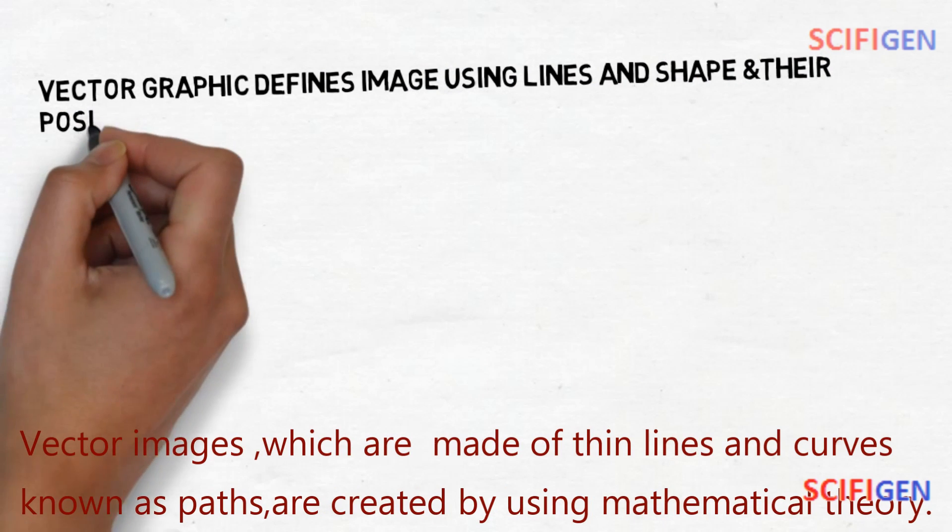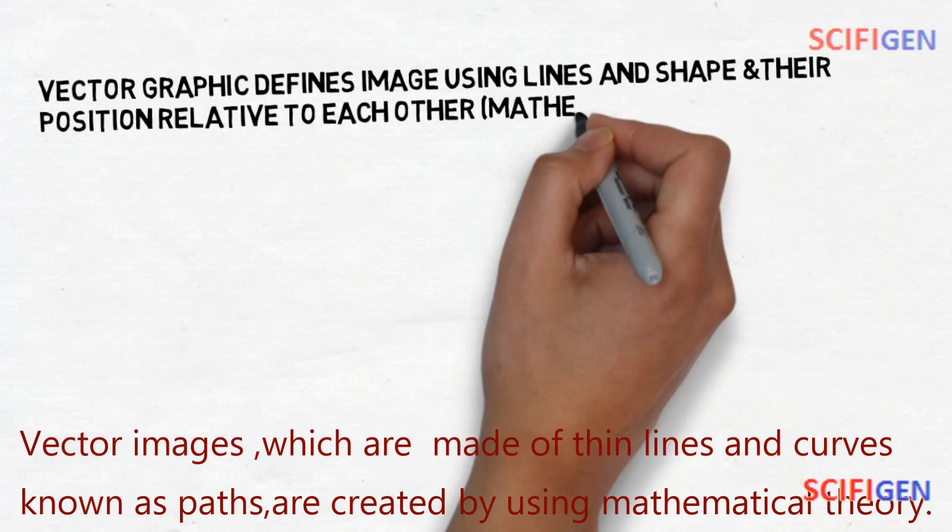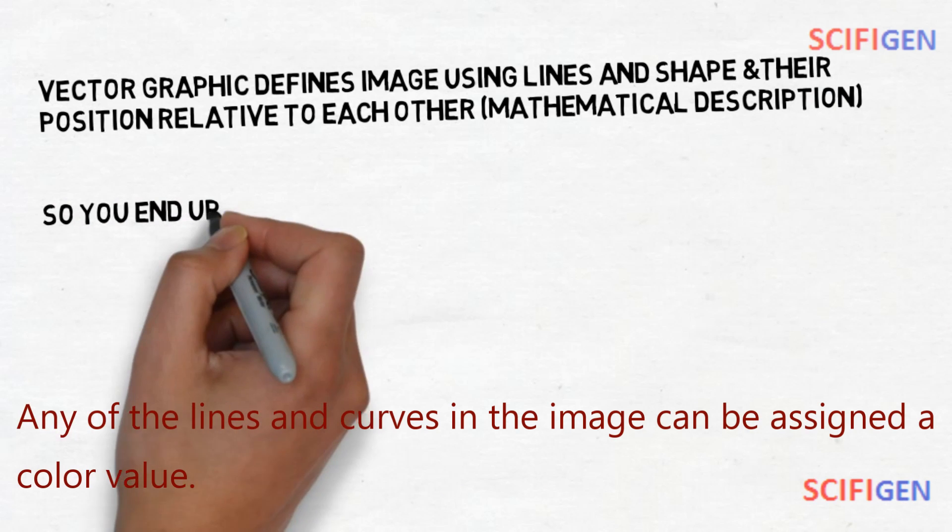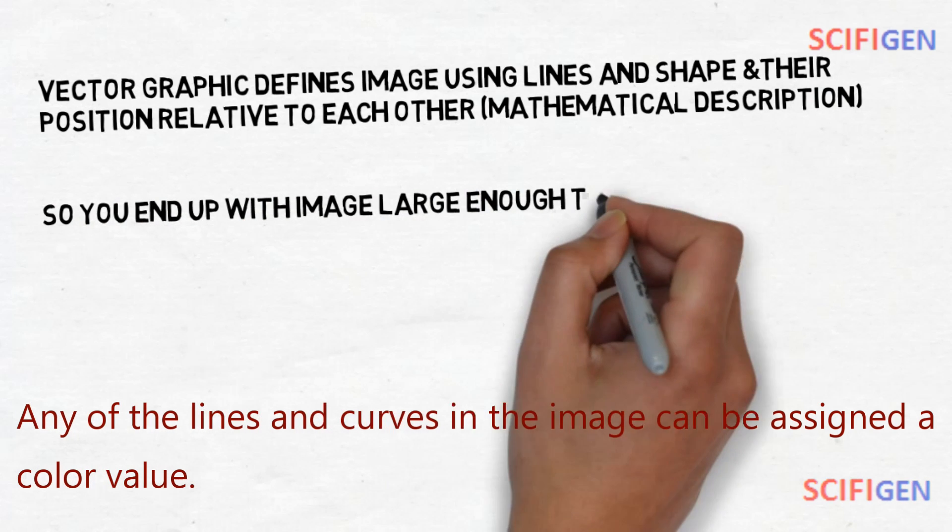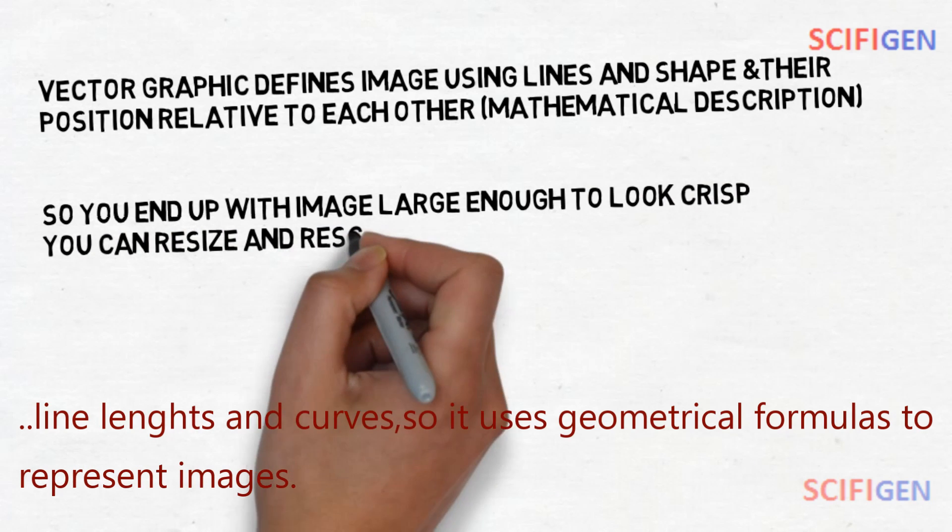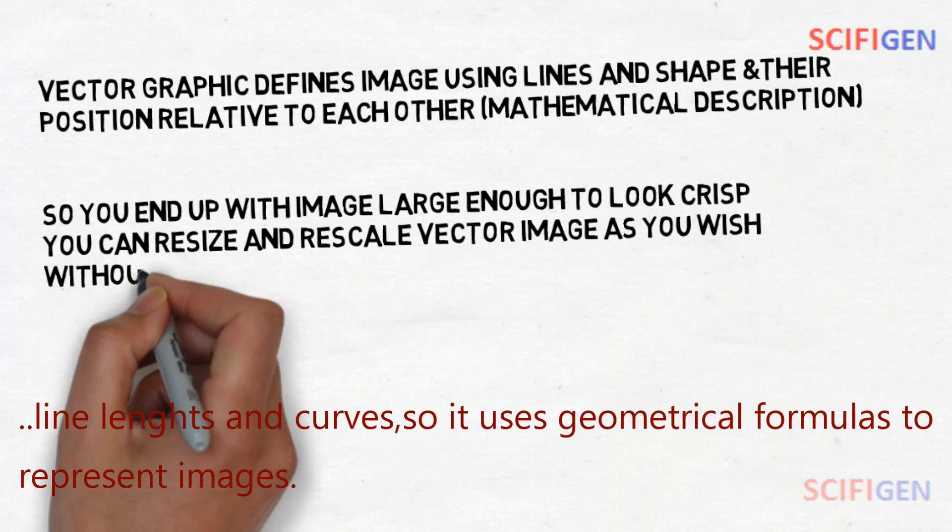Vector images which are made of thin lines and curves known as paths are created by using mathematical theory. Any of the lines and curves in the image can be assigned a color value. Each line includes defined node position, node location, line lengths and curves, so it uses geometrical formulas to represent images.